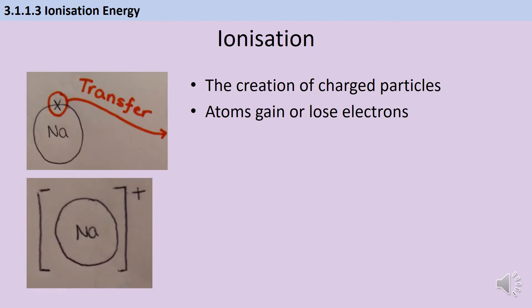To describe ionization energies, you need to know what ionization is. From GCSE, ionization is the creation of charged particles when atoms either gain or lose electrons. Electrons are negative, so if a sodium atom loses an electron, it will create an ion with a positive charge. And likewise, if a non-metal atom gains electrons, that will create a negatively charged ion.